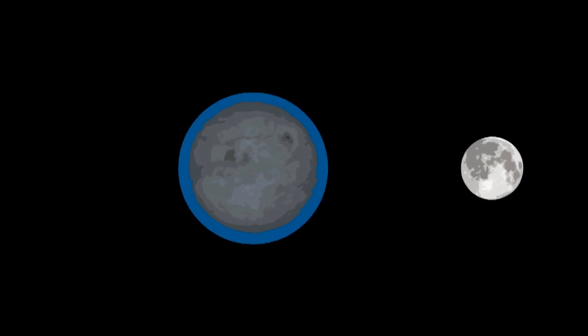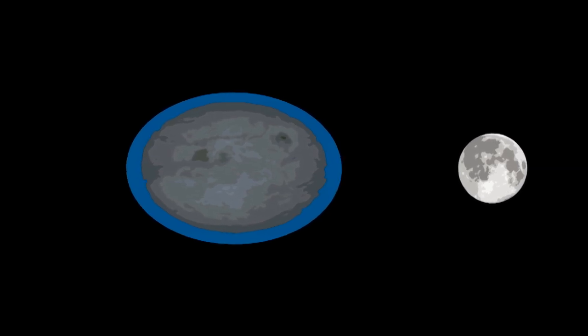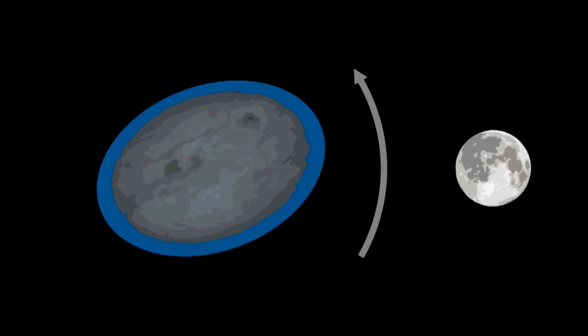The Earth stretches towards the moon, forming a bulge. But the Earth is still rotating, and so the bulge rotates along with it.